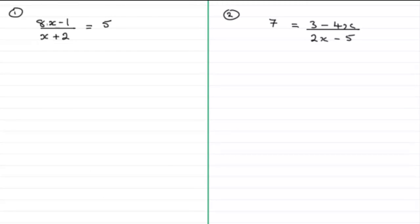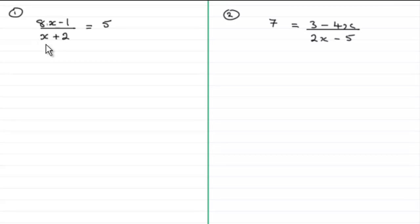Welcome to another video in my series on solving linear equations. In this video we're going to extend the work we've been doing with fractional equations involving two terms. I've got two examples here where we've got fractional equations — one term equaling another term. But what we're looking at now involves denominators with two terms: here we've got x plus 2, and in this example we've got 2x minus 5.